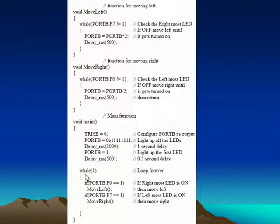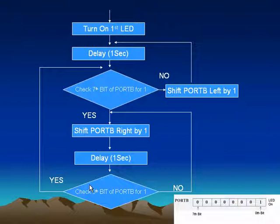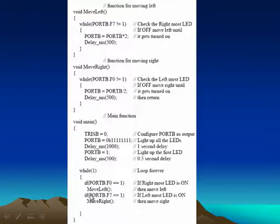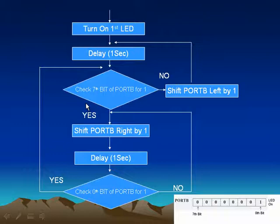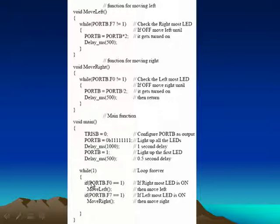It calls a 500 ms delay again. Then the program enters a while loop. The condition of this while loop is one, so it is an infinite loop. There are two if conditions. When we see our flowchart, there are two decision points or two conditions. Those conditions are implemented here using if syntax. These two if conditions check the seventh bit of port B for one and the zero bit of port B for one.